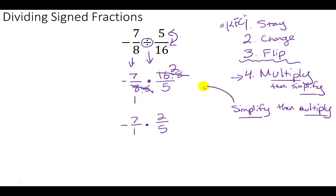I've done the simplifying, so now I can multiply. I'm going to multiply across. A negative times a positive gives me a negative. 7 times 2 is 14. 1 times 5 is 5. So I get negative 14 fifths.